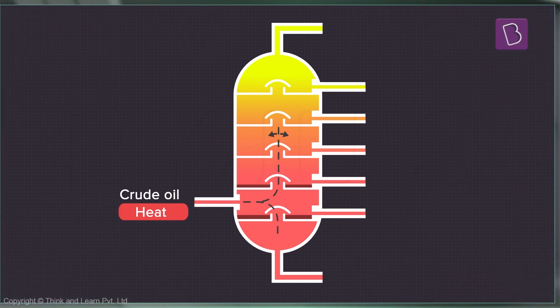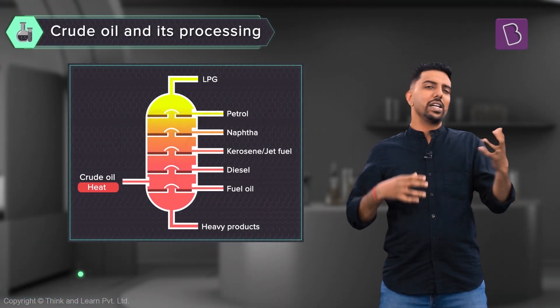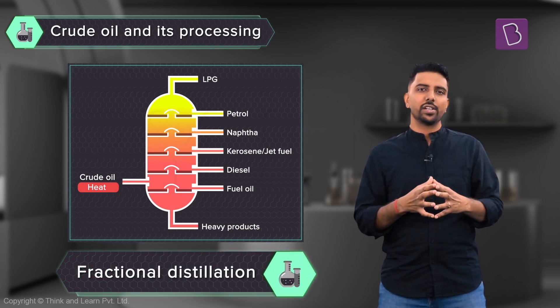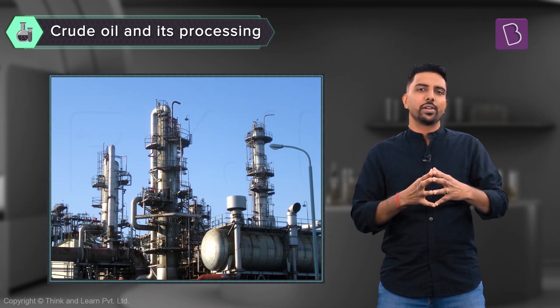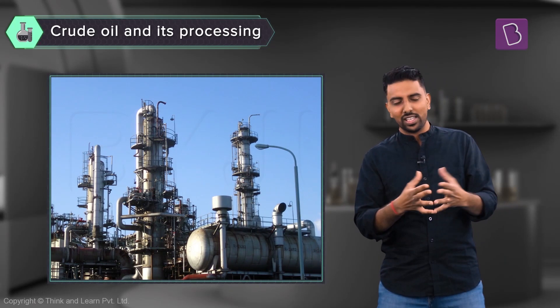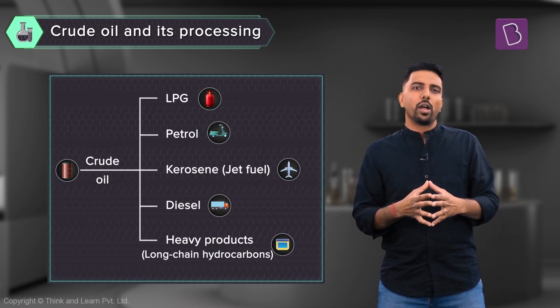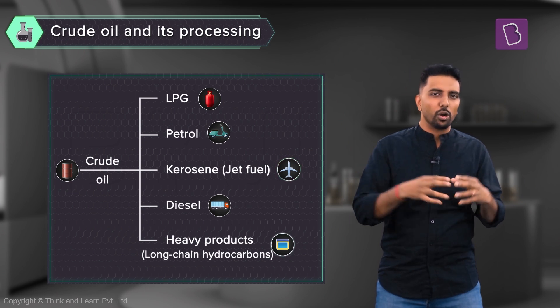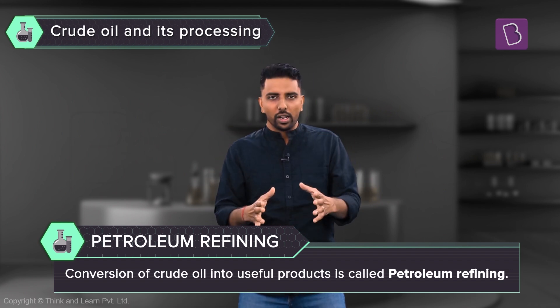The different boiling points of crude oil's constituents are used to separate its components. When we heat crude oil, the components with lower boiling points vaporize, and the gaseous components are condensed to obtain individual components. This seemingly simple process is called fractional distillation, though it is actually pretty complicated in reality. Overall, crude oil can be converted into useful components like LPG, petrol, diesel, kerosene, and jet fuel — a process called petroleum refining or oil refining.